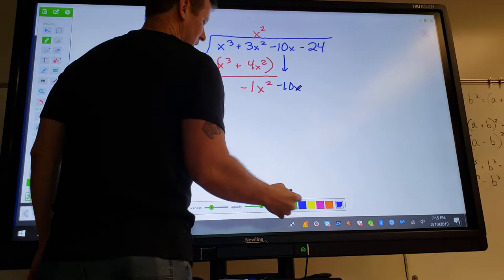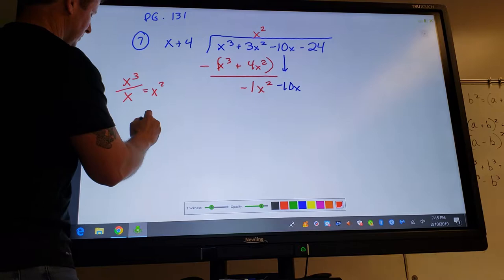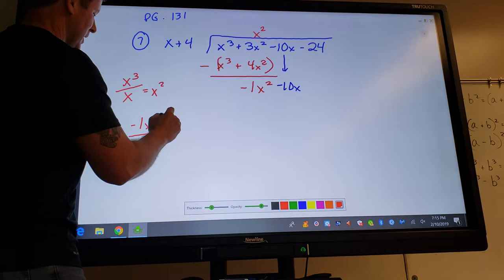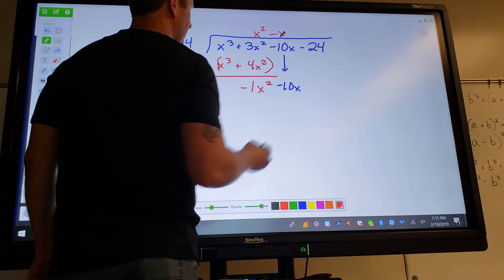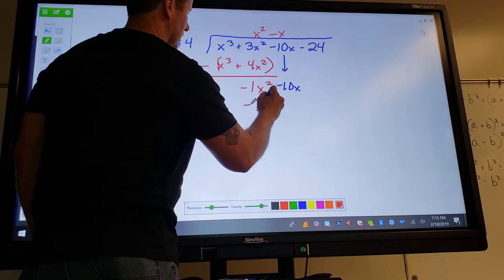Bring down your negative 10x and repeat the process. How many times does x divide into negative one x squared? Whether you need to write it down or not, that gives me negative x or negative one x. So I'm just going to write negative x. And again, I'm going to do the math. Negative x times x is negative x squared. Negative x times four is negative four x.